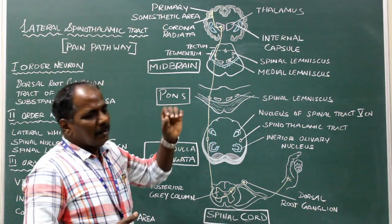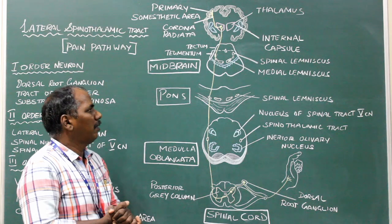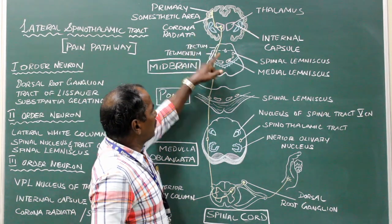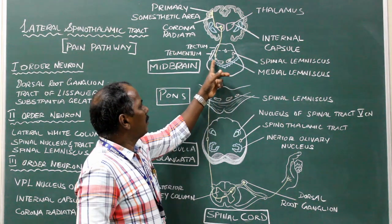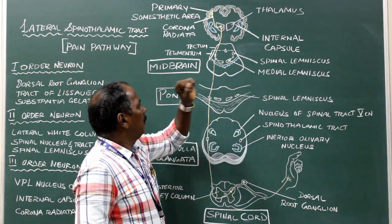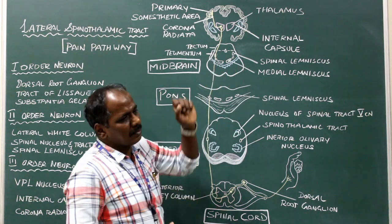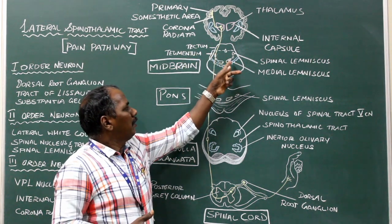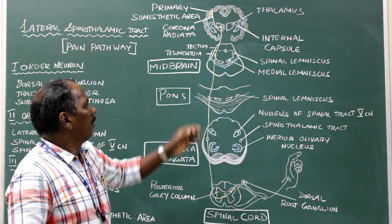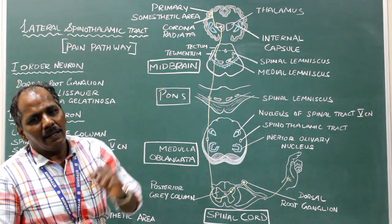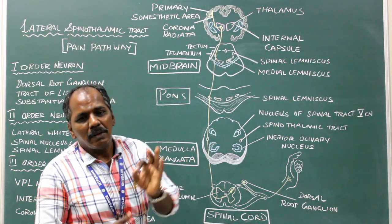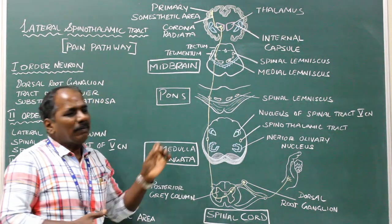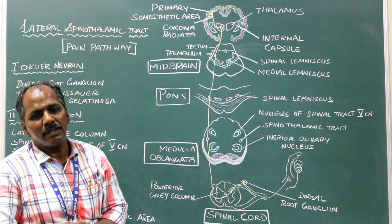In the midbrain, it lies in the tegmentum, lateral to the medial lemniscus. So in the midbrain we can identify the medial lemniscus, the spinal lemniscus, and the trigeminal lemniscus. Ninety percent of the fibers end by synapsing in the ventral posterolateral nucleus of the thalamus. This completes the second order neuron.